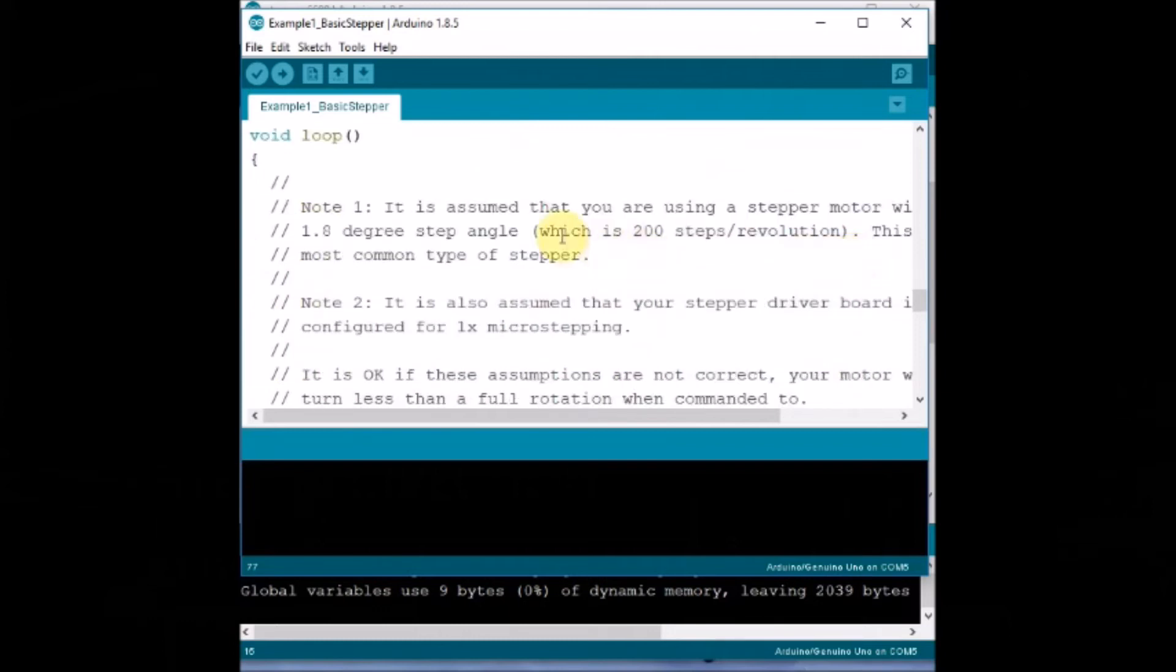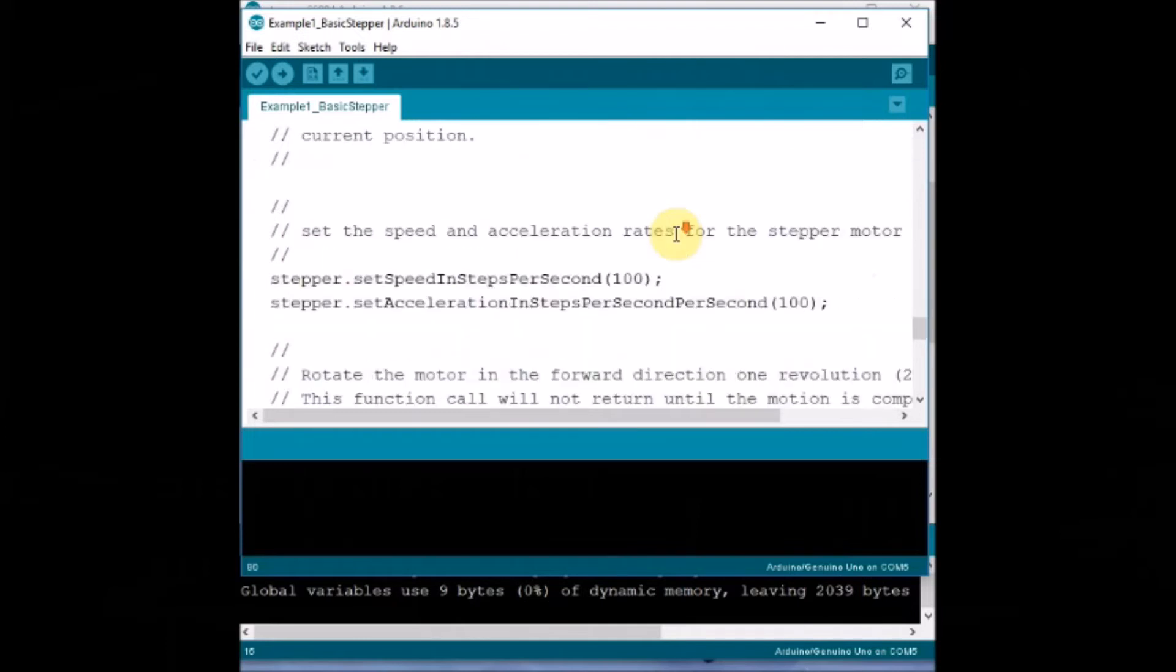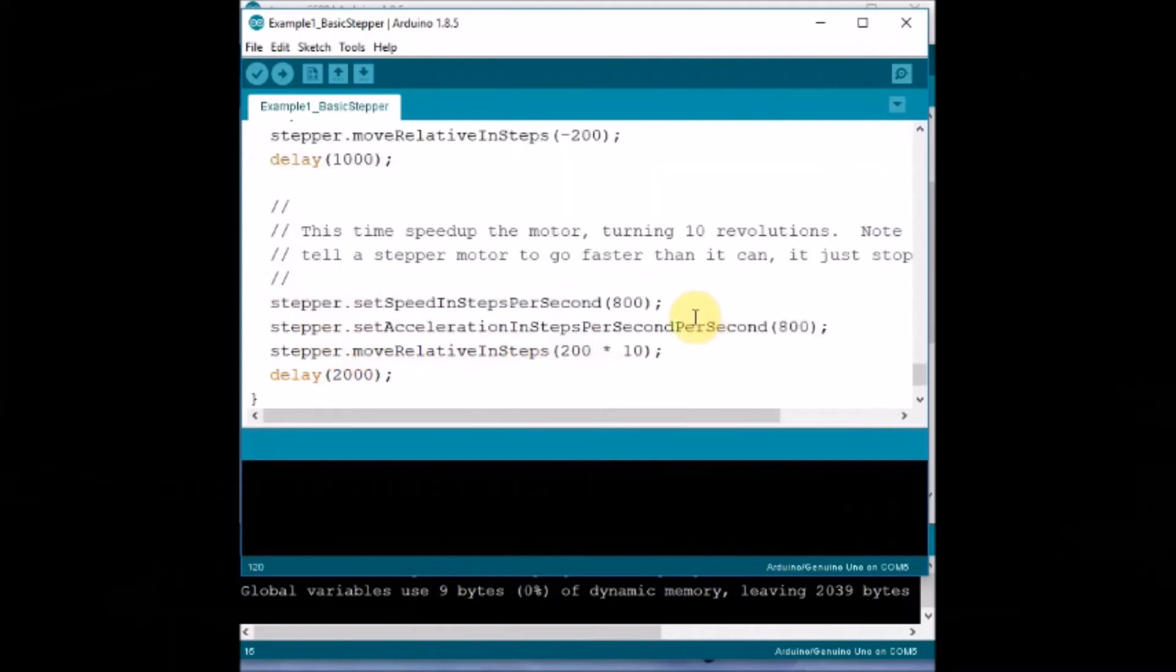Inside setup, set speed and acceleration to 100. And then move stepper dot relative in steps to 200 so that it makes one circle. And after delay, we just make it anti-clockwise to move 200 steps. And finally, increase the set speed to 800 and make the move relative in steps 10 times so that it makes 10 rotation. That is one clockwise rotation, one anticlockwise rotation, and then increase speed to make 10 rotations.